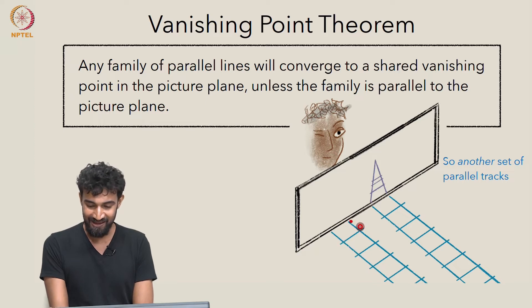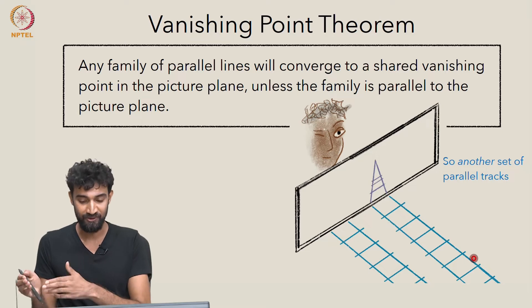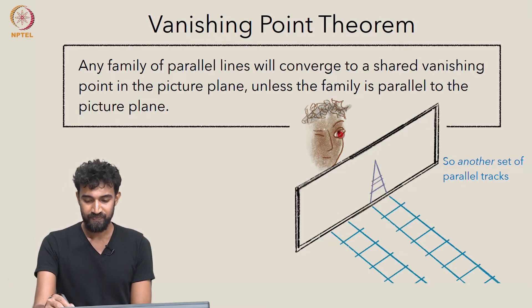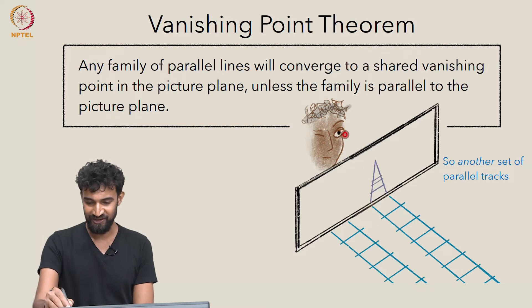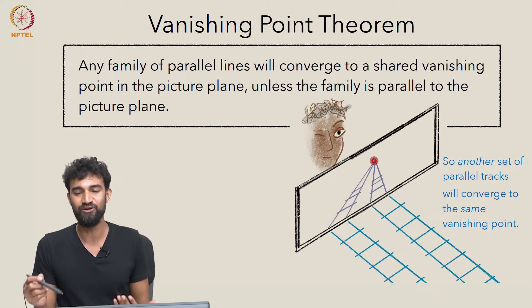Well, it's in the same family as our original railway tracks. They're all parallel. All these side rails are parallel to one another. So as we look further and further along one of them, we're going to reach a limiting sight line which pierces the picture plane at that same vanishing point. And this full family of parallel lines will all share this vanishing point on the picture plane. That's what our theorem is saying.